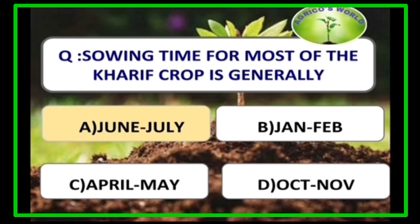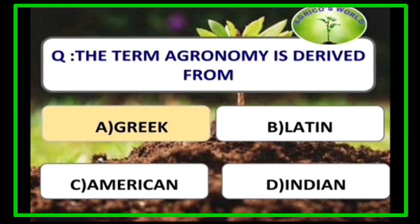Sowing time for most kharif crops is generally June to July, rabi crops is generally October to November, and summer crops is mostly April to May. The term agronomy is derived from the Greek language; any term that ends with -logi is Greek and logi means discussion.